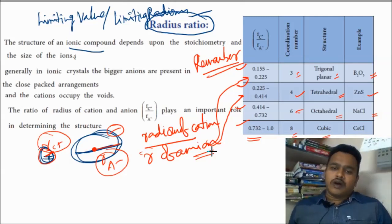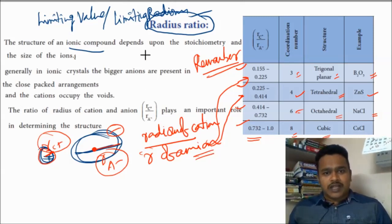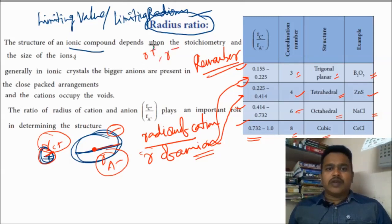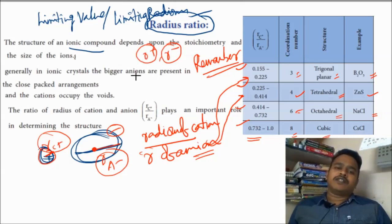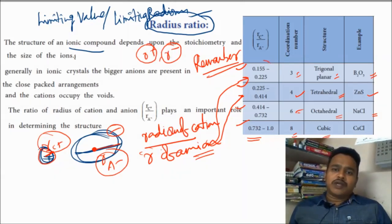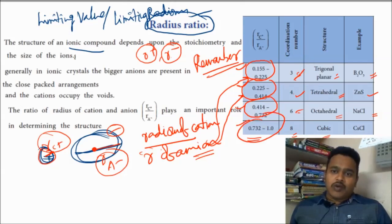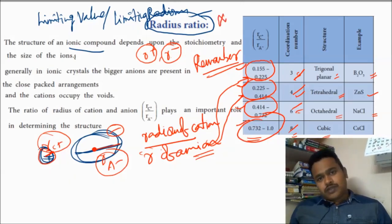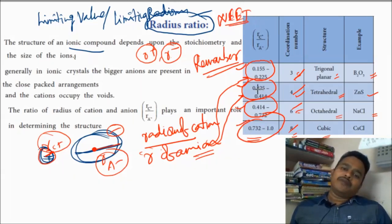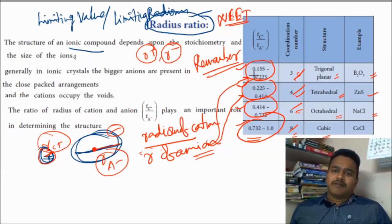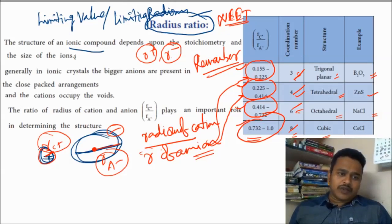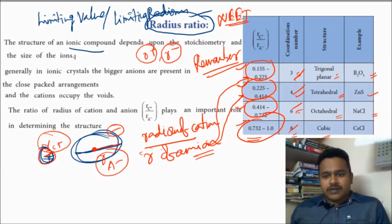In the examination, they will give the r⁺ value and r⁻ value — radius of cation and radius of anion. Then you find r⁺/r⁻, and that value tells you which range it belongs to, from which you determine the coordination number. This is important for NEET. The numbers are important; practice many times and you will remember them automatically. Thank you.